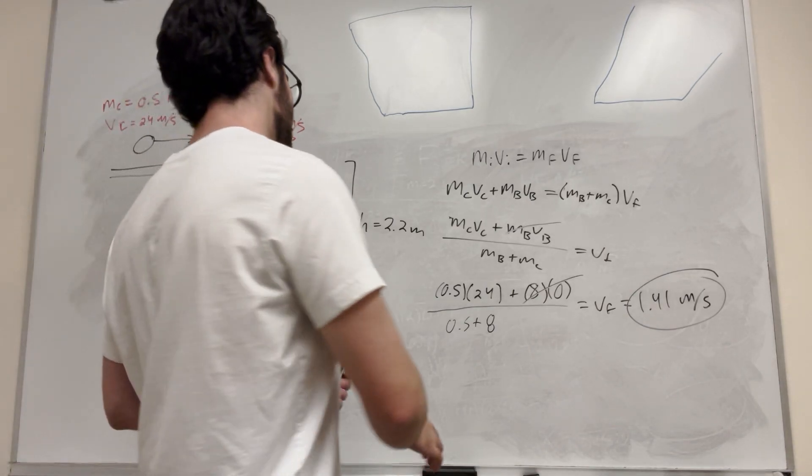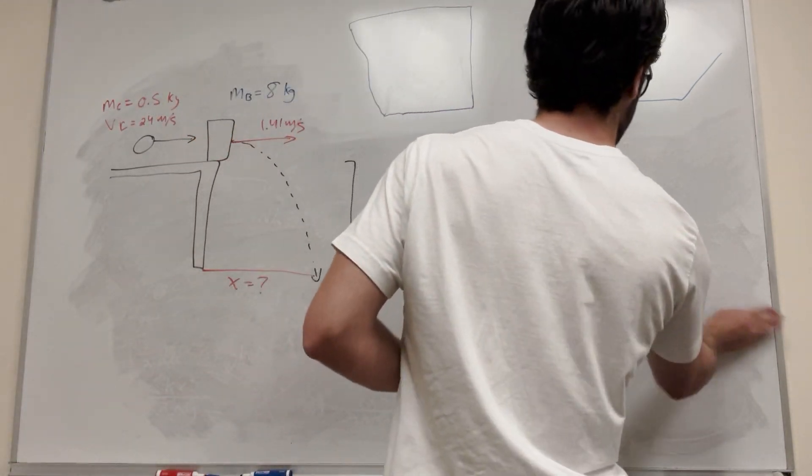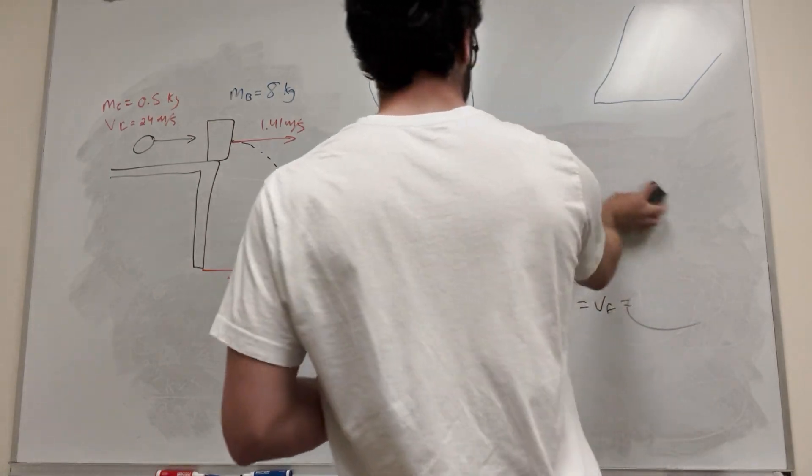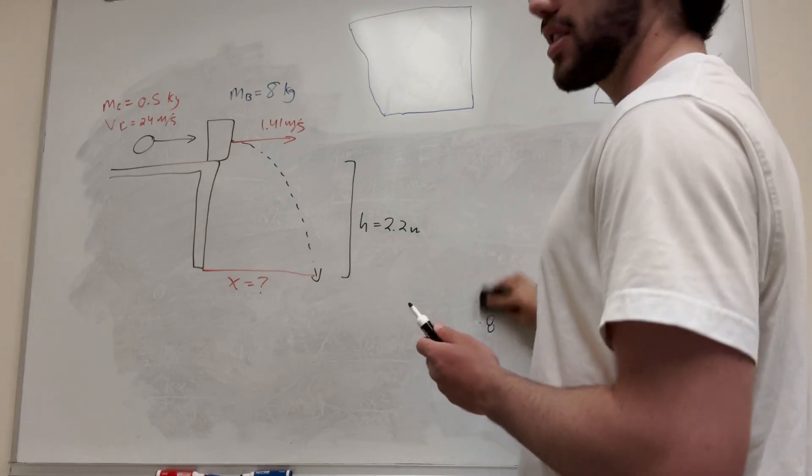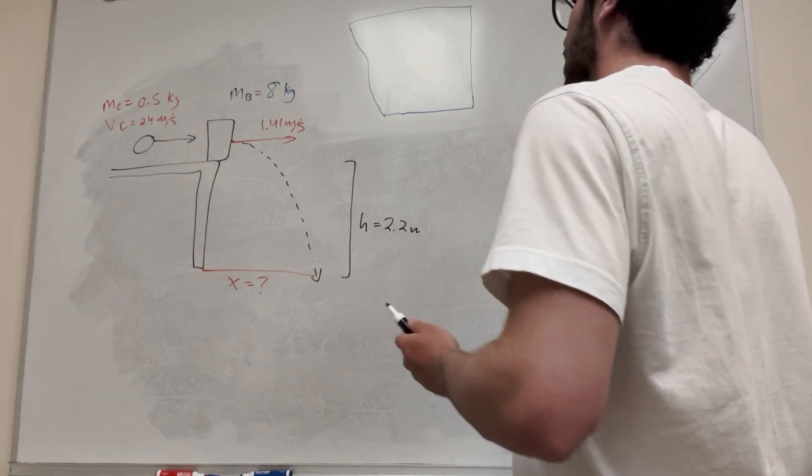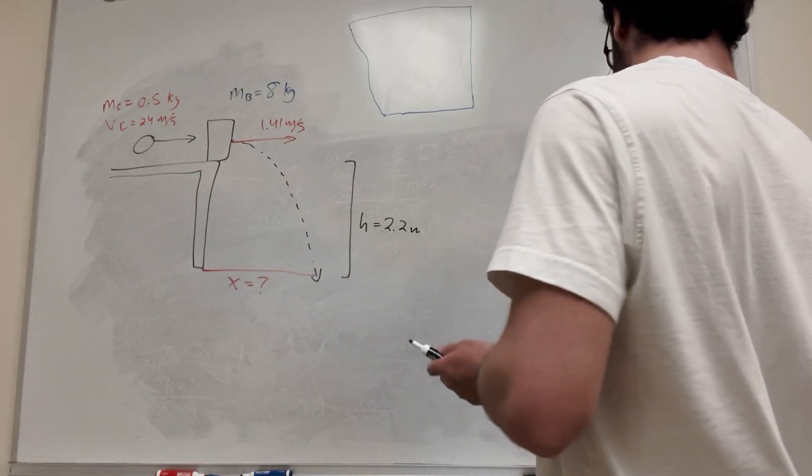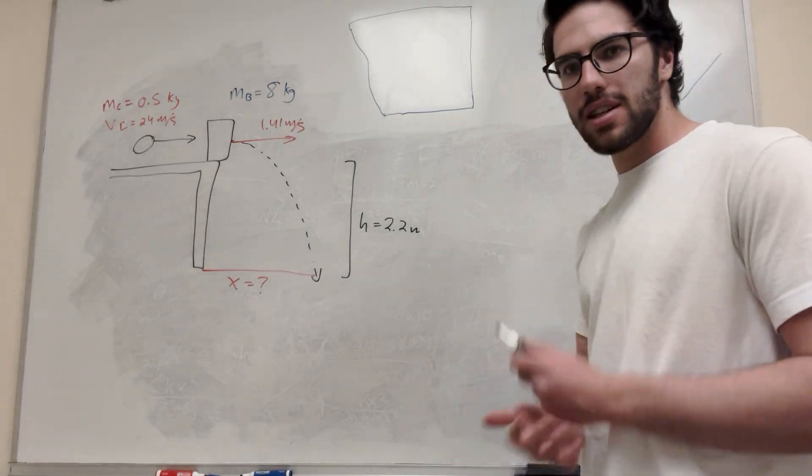We figured it out. Nice job. That's not the end of the problem though. We have to find out how far it goes in that distance. So there's probably multiple ways you can do this. The way I'm most comfortable with is free fall. You find how long it takes to fall, and then you find how long it goes in that much time.